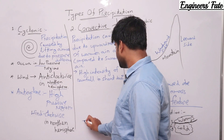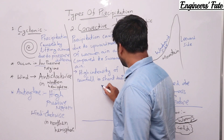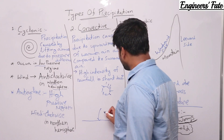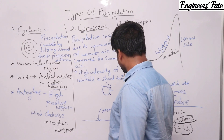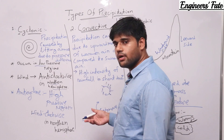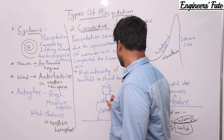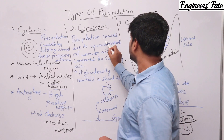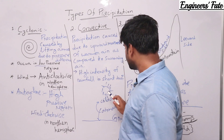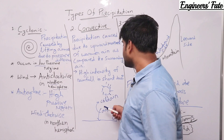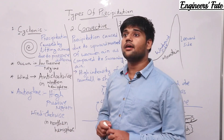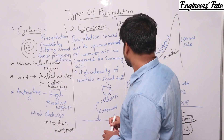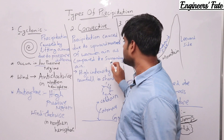Convective precipitation: the ground is heated due to the sun's presence, which heats the air mass at ground level. The heated air moves upward and mixes with cold air at higher elevations — and then rainfall occurs. The definition is: precipitation caused due to the upward movement of warmer air compared to the surrounding air. As we move up in elevation, temperature decreases, which is the mechanism here.